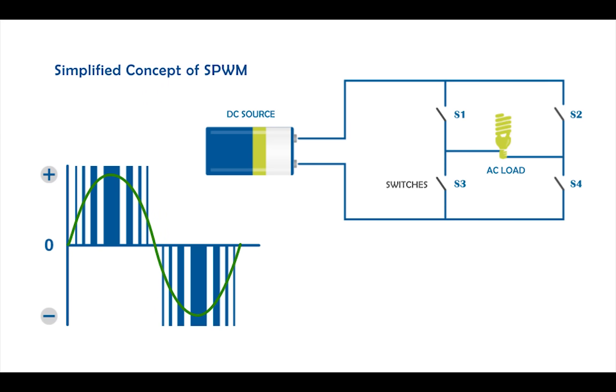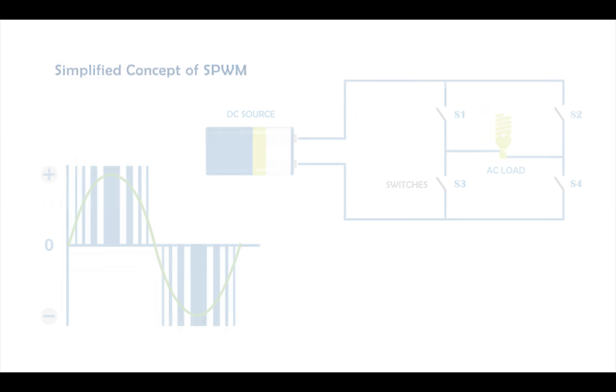The controller board controls the amount each switch is open, and with that it adjusts the voltage and frequency. So in general, this was how inverters work.